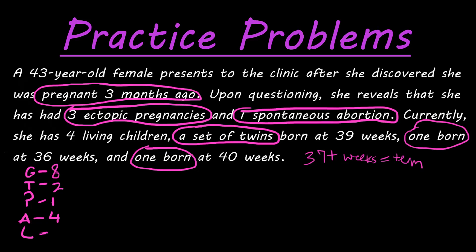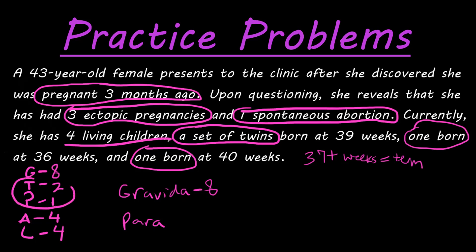For living children, it tells us she has four living children, so that's four. Gravida is eight — the total number of pregnancies. Para is the number of births after 20 weeks, so we add term births and preterm births together: two term plus one preterm gives us a Para of three. Hope this helps.